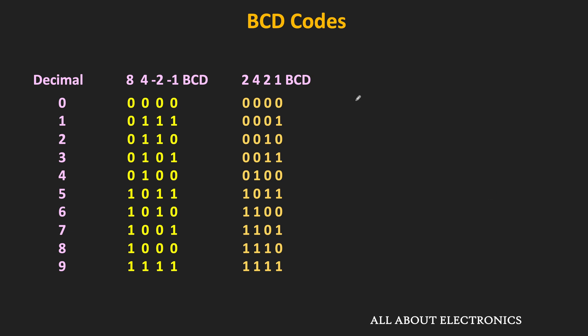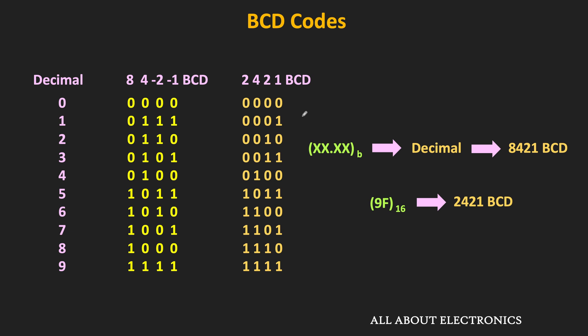So earlier we have seen that if we have some number in the base B number system, this is how it can be converted into the equivalent 8421 code. Similarly, it can also be converted into the other BCD codes. Here is the exercise for you: try to convert this hexadecimal number into the 2421 code, and also convert this binary number into the equivalent BCD code. Let me know your answer in the comments.